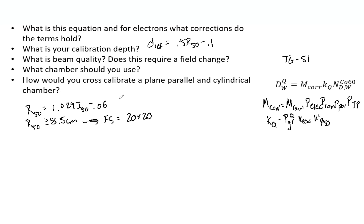How would you cross-calibrate a plane parallel in a cylindrical chamber? First thing is you want to use the highest electron energy possible. Ultimately, you're trying to find KE-cal and the absorbed dose-to-water calibration factor for a plane parallel. That's ultimately what we're trying to do. Second step is to find the K-prime R-50 for a plane parallel chamber using the R-50.